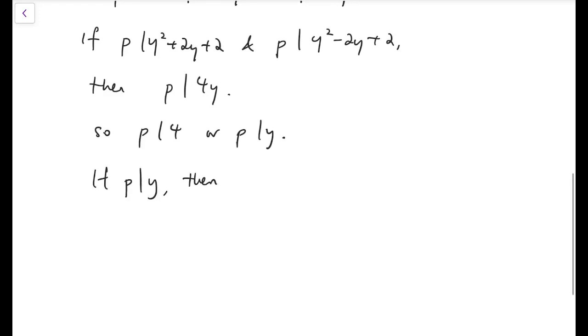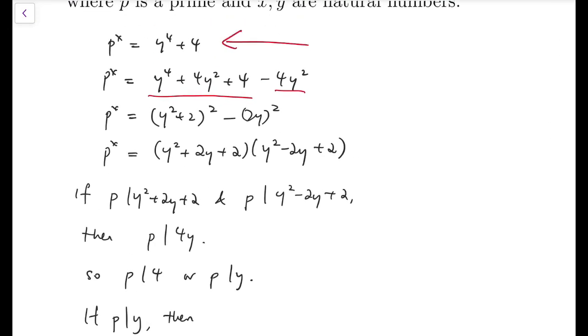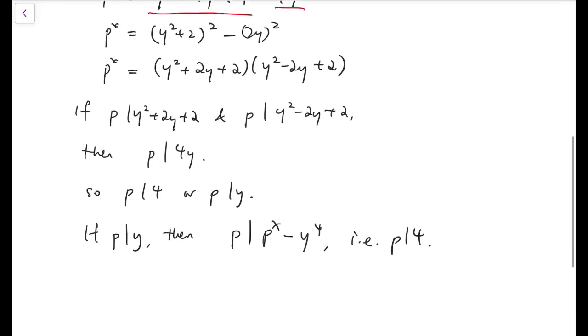If p divides y, then we return to the original equation, which is this one, then we know that p to the x and y to the 4 are both multiples of p. And so p would divide p to the x minus y to the 4, which means, again, p divides 4. So regardless of both cases, regardless we have p divides 4 or p divides y, we still reach the fact that p divides 4. Therefore, p is 2.